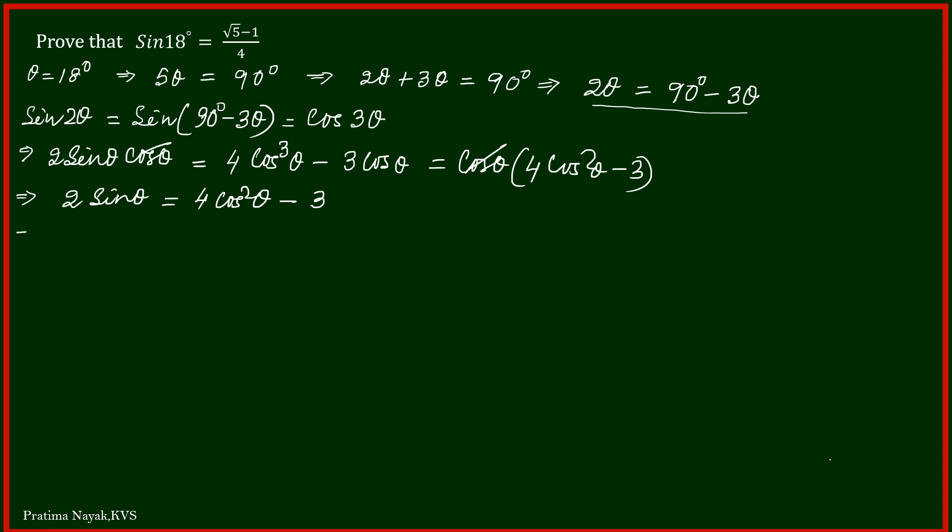Now shifting all the terms to left side, I will get 2 sine theta minus 4 cos squared theta plus 3 equals 0.